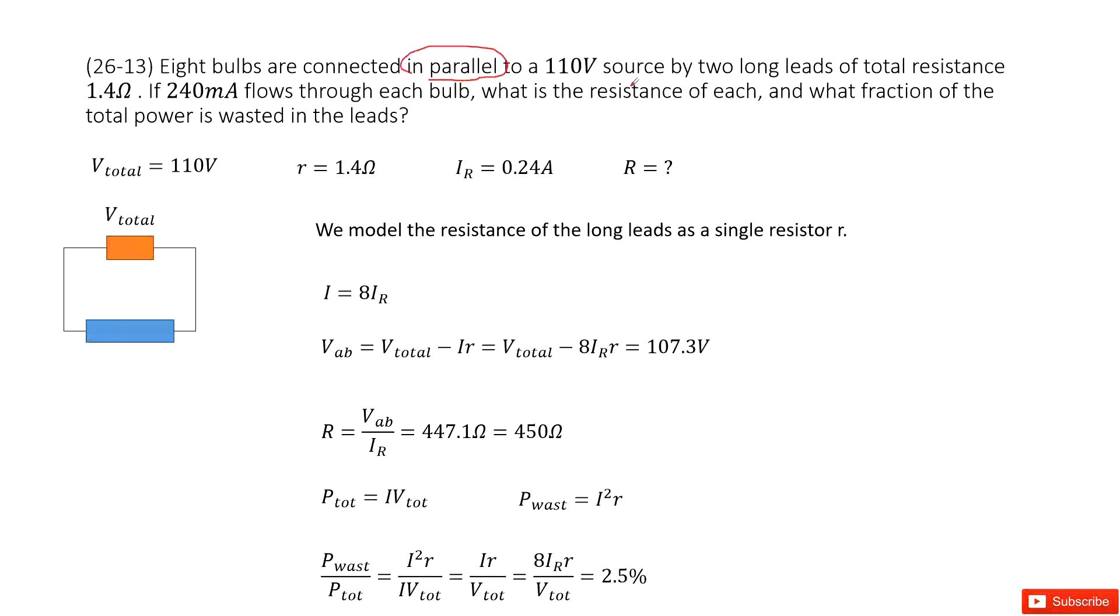To our power supply, it is 110 volts by two long leads of total resistance 1.4 ohms. We can draw a picture here. We see the total voltage is 110 volts. Internal resistance is 1.4 ohms. And then, for each light bulb, the current goes through. We can write as I_B at 0.24 amps.